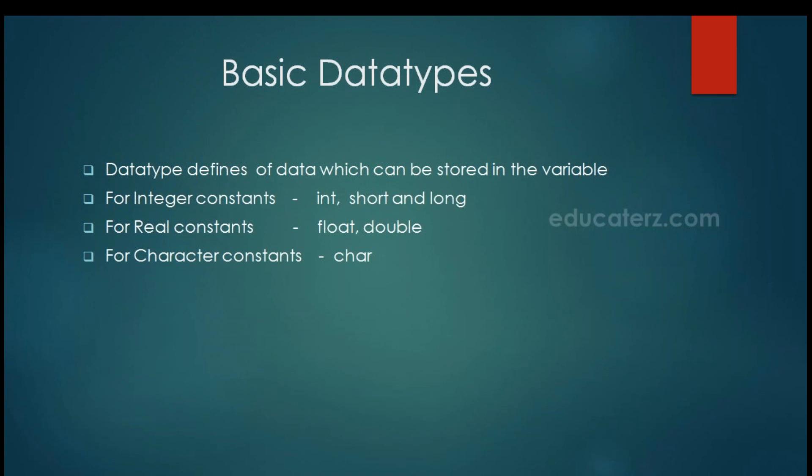Now, what is a data type? A data type defines the type of data which can be stored in a variable. For integer constants we have int, short, and long. For real constants we have float and double. For character constants we have char.